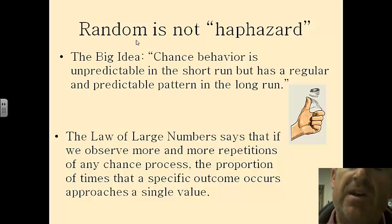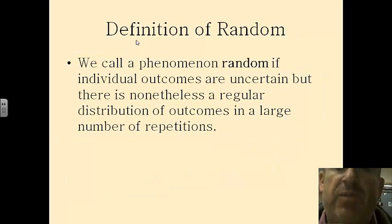Because we know that theoretically that's what should happen. The law of large numbers says that if your sample size is big enough, that's what will happen. So definition of random. We call the phenomenon random if individual outcomes are uncertain, but there is nonetheless a regular distribution of outcomes in a large number of repetitions.